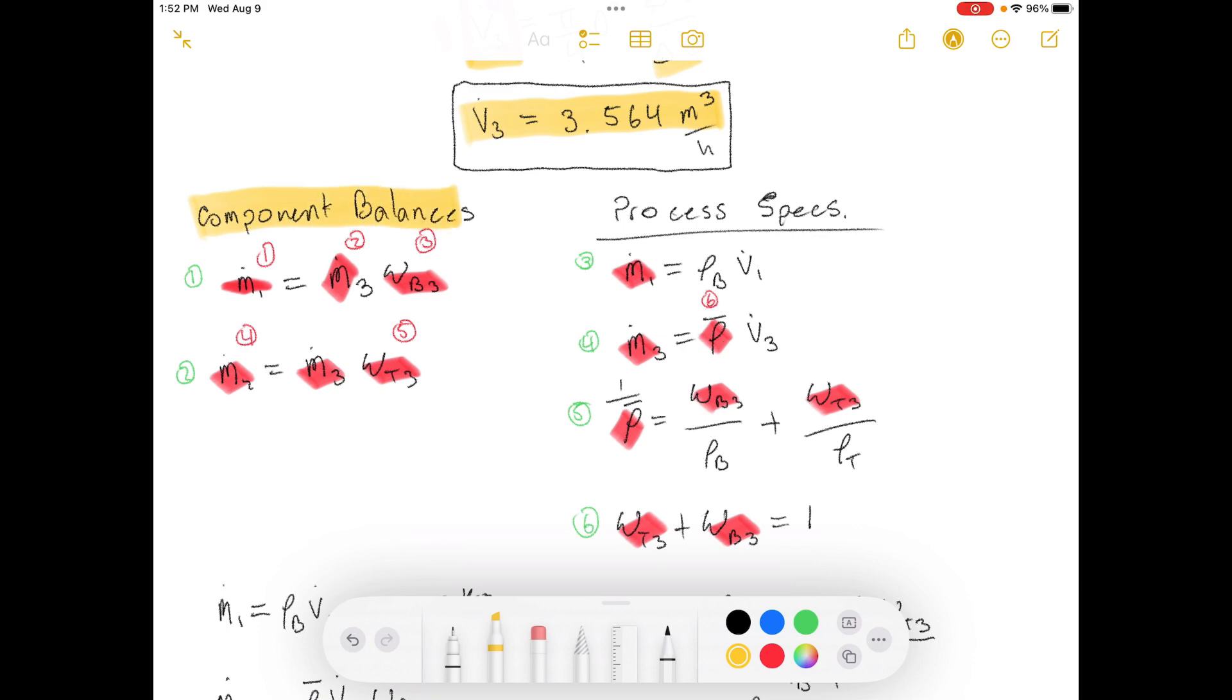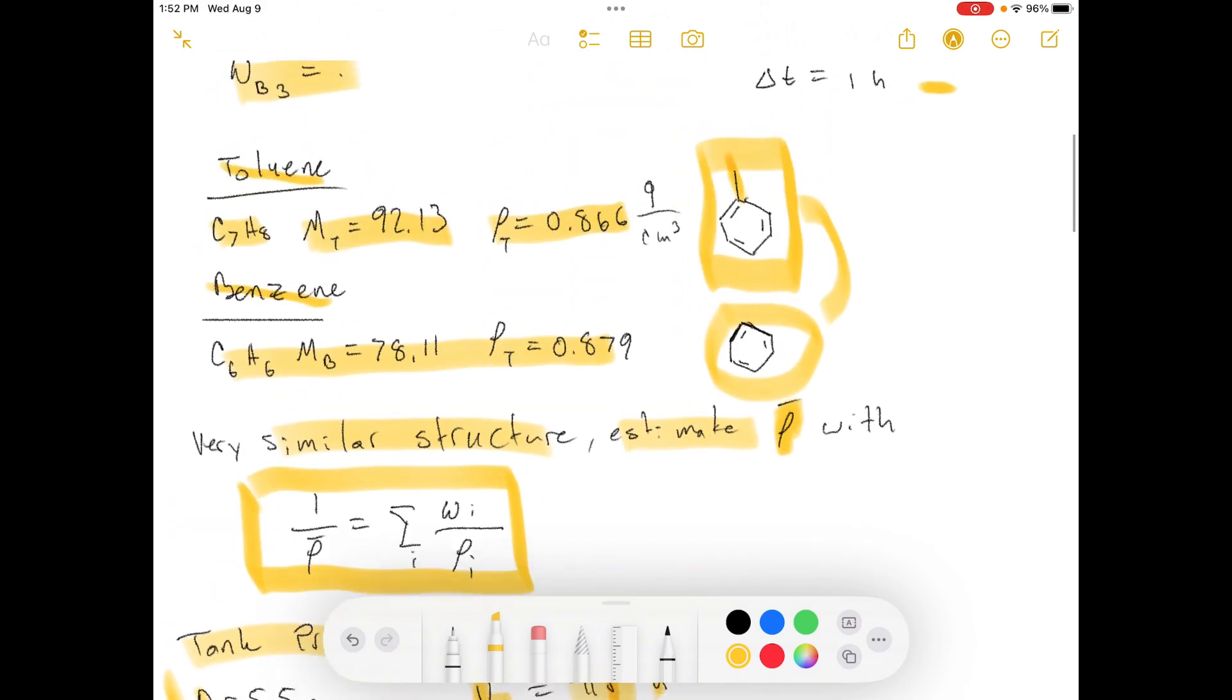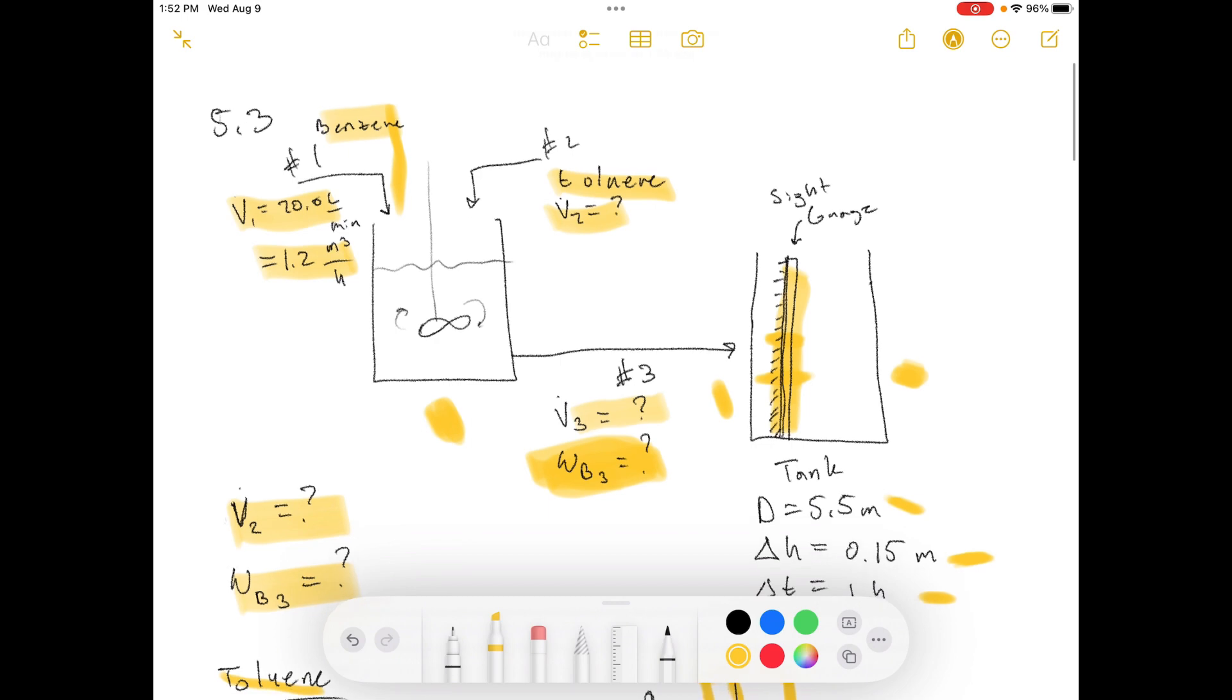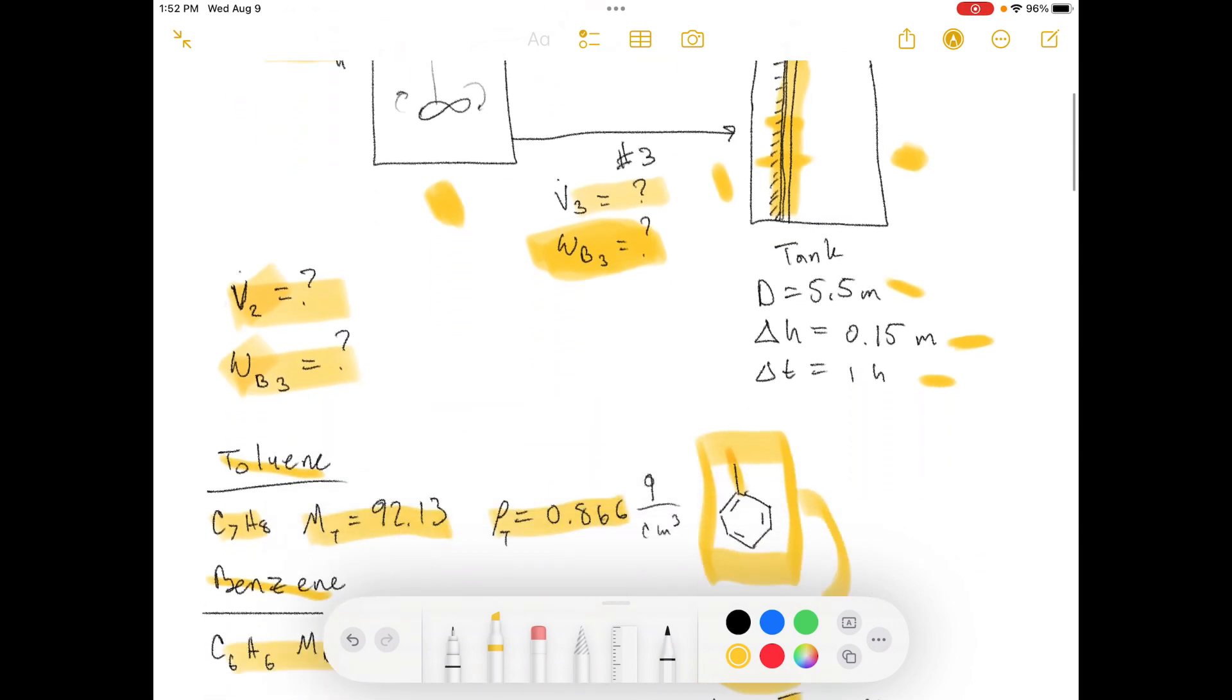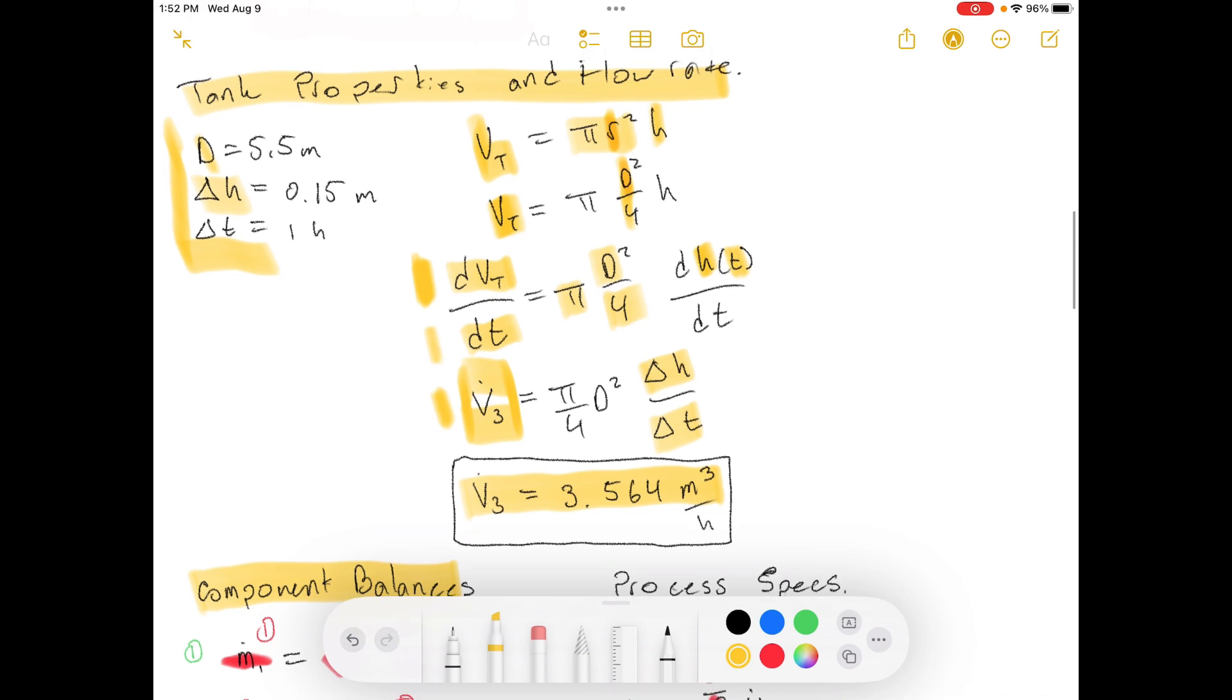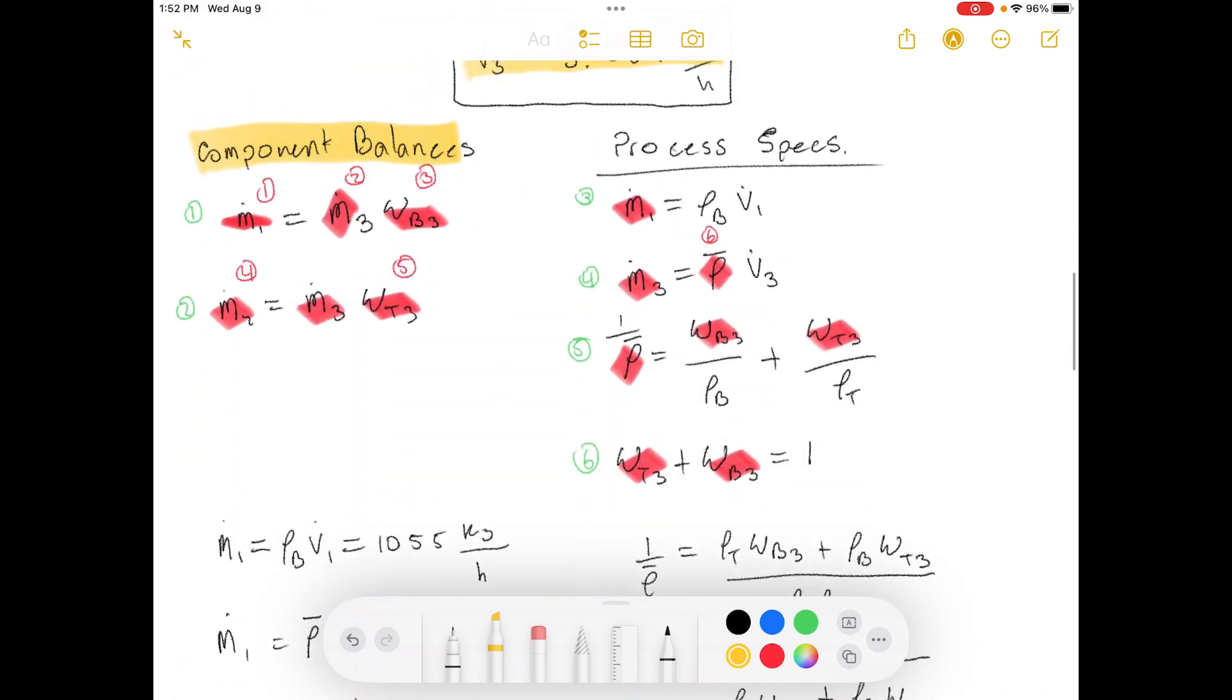Now, we need to do our component balances on the system in order to solve what these things are. We need to do mass balances, component balances, things like that. So, now we're doing our component balances. We have the mass balance on the benzene and the mass balance on the toluene. So, there's just the two components. But then, we have several process specifications.